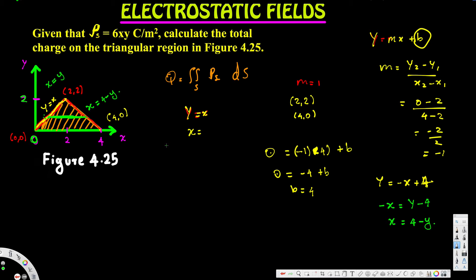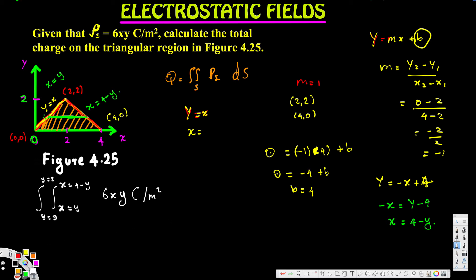So we have the limits of integration for both y and x. Let's go ahead and set up the double integral. The outer integral for y goes from 0 to 2. The inner integral for x goes from x equals y (the first line) to x equals 4 minus y (the second line). We integrate the charge density 6xy with respect to dx dy.